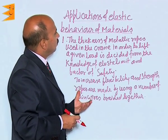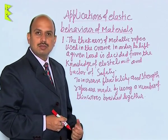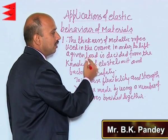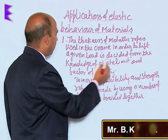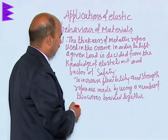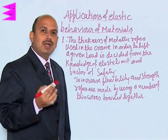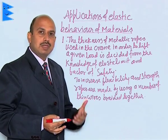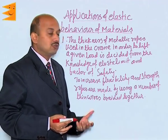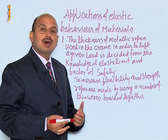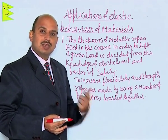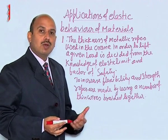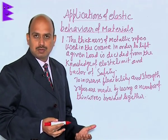Now, see here the application of elastic behavior of materials. The first application is the thickness of metallic ropes used in cranes to lift a given load, which is decided from the knowledge of elastic limit and factor of safety. Cranes are used to lift heavy things — buses, trucks, or any other objects. The ropes of cranes are made using a large number of thin wires which are braided together, increasing the strength and flexibility of the rope.